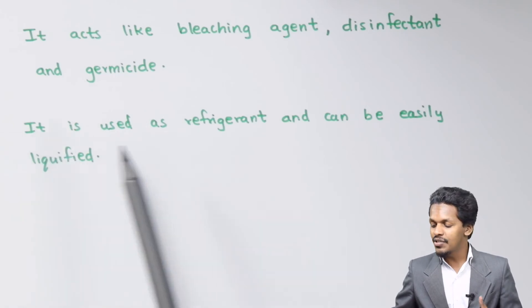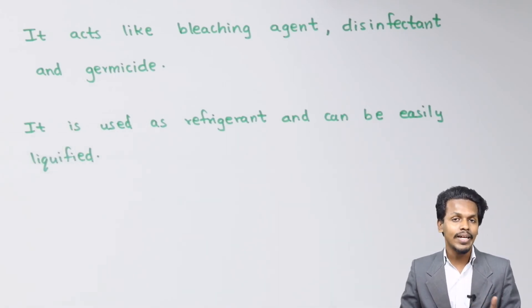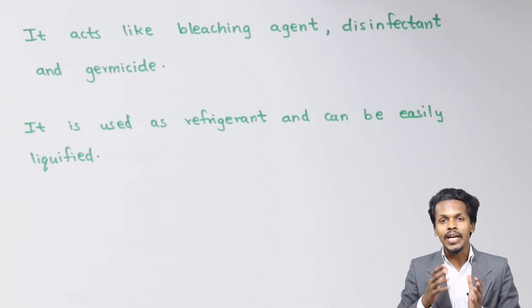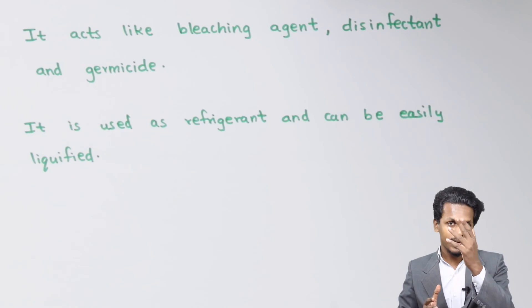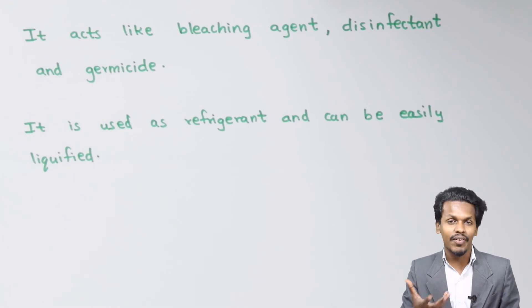Talking about the next point, it is used as a refrigerant and can also be easily liquefied. We know that once it gets easily liquefied, we can use this SO2 as a refrigerant also. Once it gets evaporated, it can be re-evaporated because its boiling point is 263 Kelvin, and obviously it can be liquefied very easily.